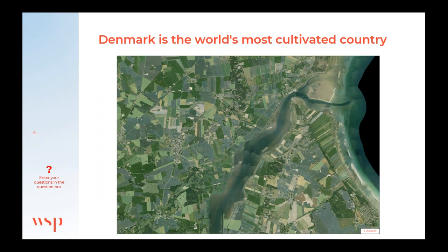Today approximately 60 percent of Denmark's area is intensely cultivated. Since the Stone Age, Danes have been trying to expand and dewater arable land for agricultural purposes, especially during the 20th century when drainage projects were carried out in virtually all Danish river valleys and lowland areas. Streams were straightened, meadows and bogs were drained, and lakes and fjords were drained by establishing dikes and pumping stations.